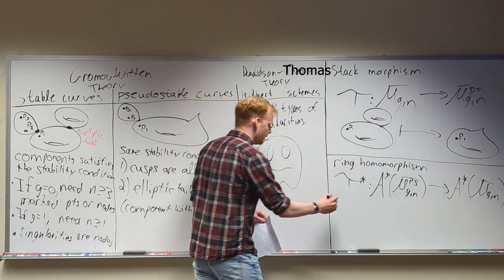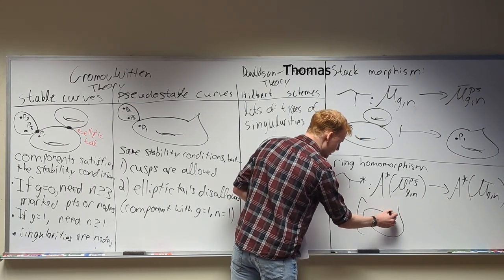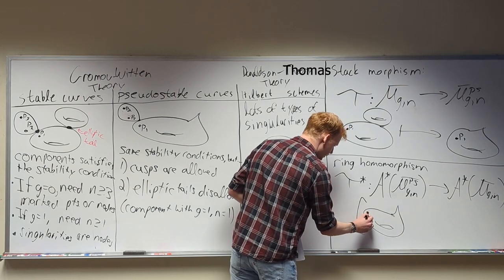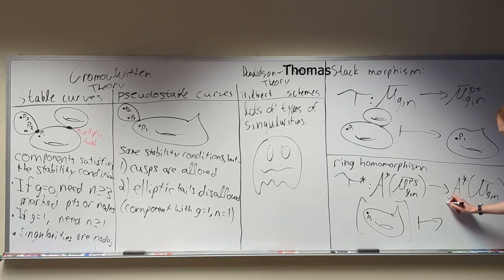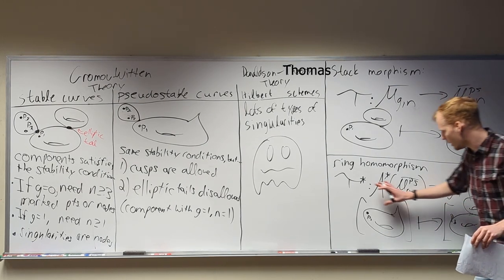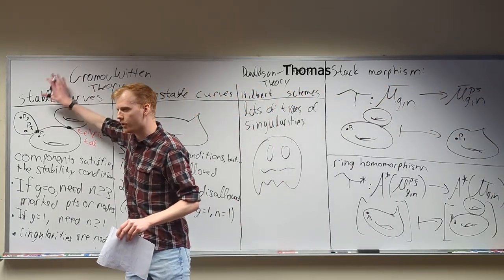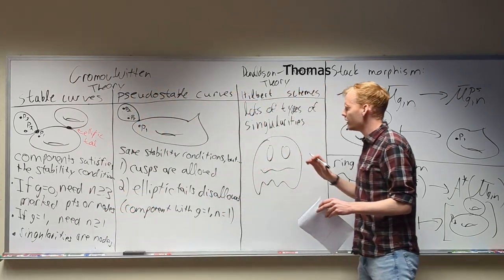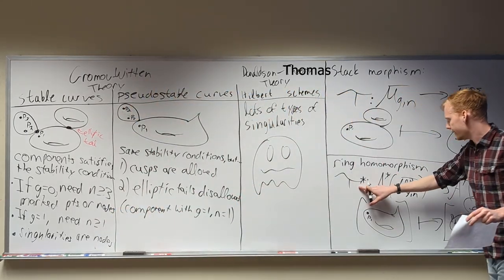If I have the class of a pseudo-stable curve — something like this — that has a point on it and a cusp, that cusp gets traded out for an elliptic tail over here; other than that, it's the identity. This is our main tool that gets everything started, because pseudo-stable curves are new and unknown, but if we can pull them back to stable curves, there's a lot of theory that's been done there. A lot of the story today is the relationship between these two types of curves, done through this pullback.